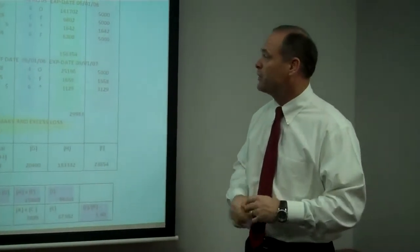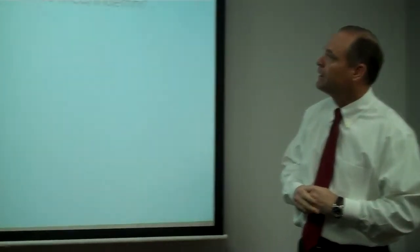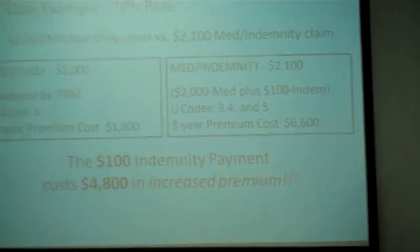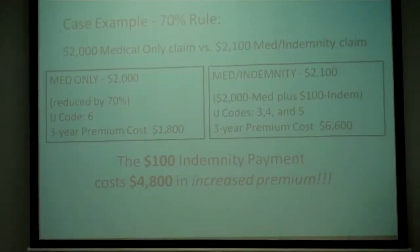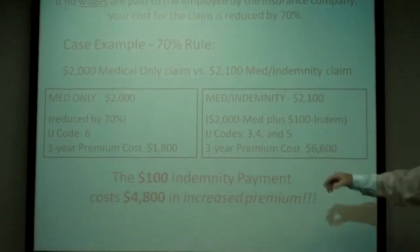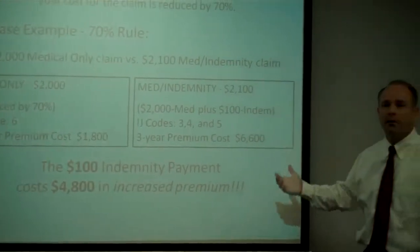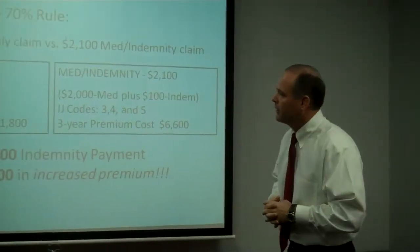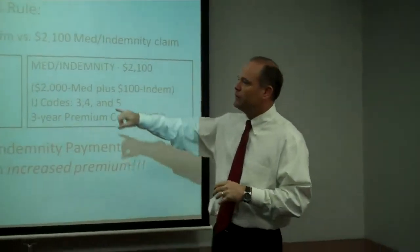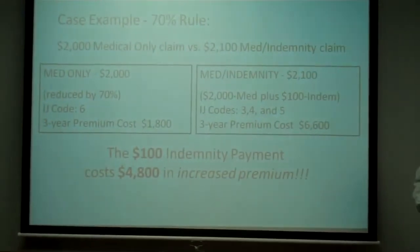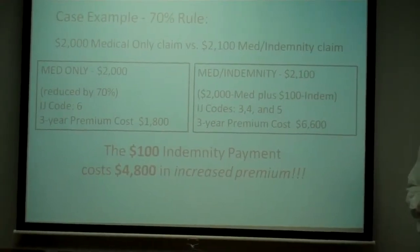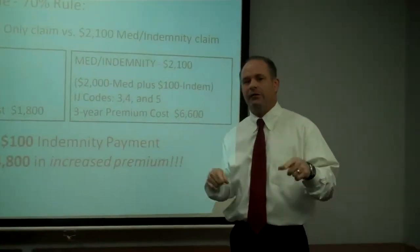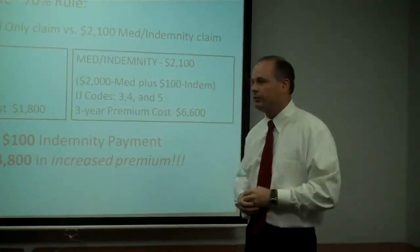This is an example of ERA, the Experience Rating Adjustment. What we've done here is taken a $2,000 medical-only claim. $2,000 in medical bills was the only thing paid. There haven't been any lost wages, no permanency ratings, no occupational therapy. $2,000 in medical bills, that number is reduced by 70%. It's IJ6 coded or medical-only. So only $600 of that loss arrives in the ratable primary or in the experience rating formula.